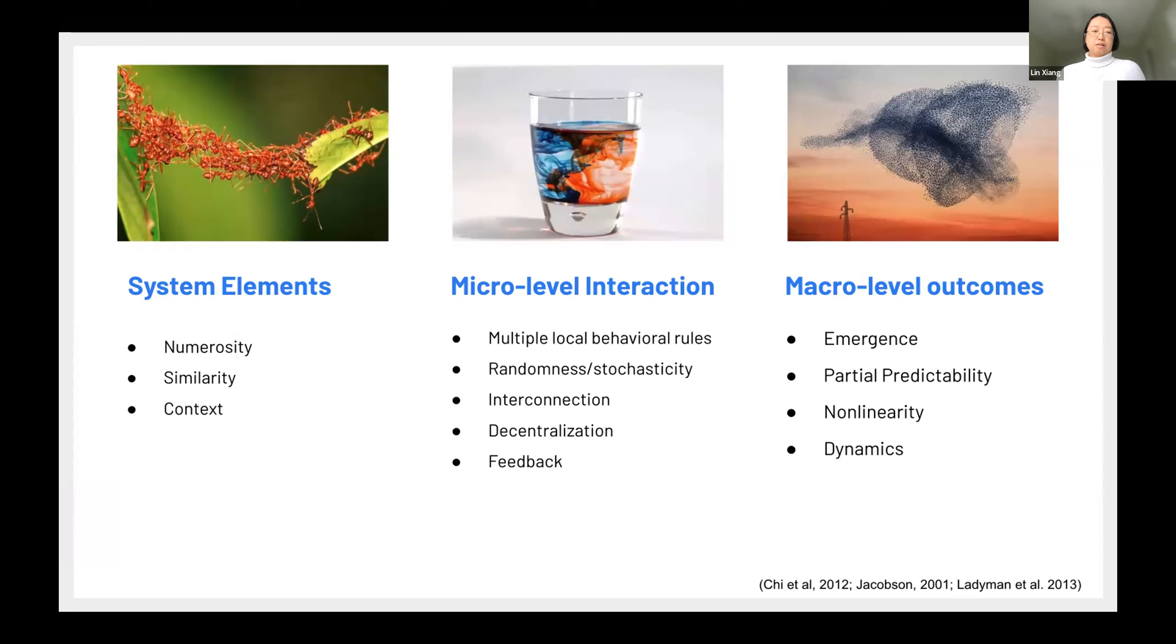For example, when we think of the system elements, we think about there should be a certain number, at least sufficient. Also, we think about this individual, these elements, they're similar but not identical. And also they're influenced by their context. And then when we think about the interaction, micro level interaction, we think about their randomness is built in. And this interaction makes all individuals interconnected. And also there's often no central control there, they're decentralized. And also then these interaction lead to the feedback.